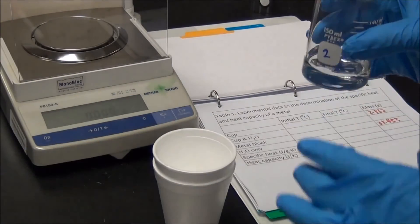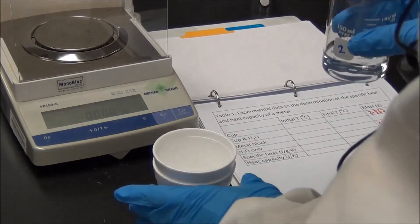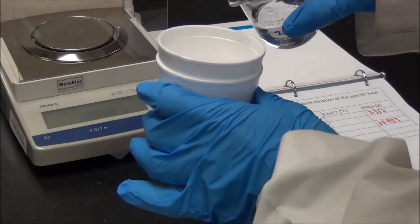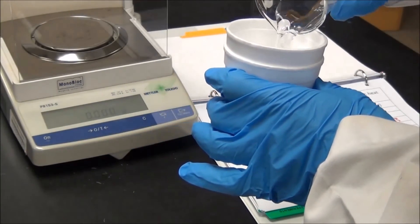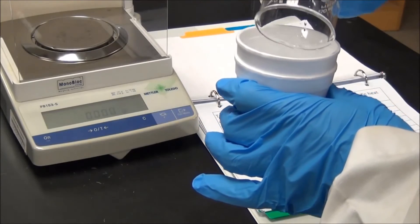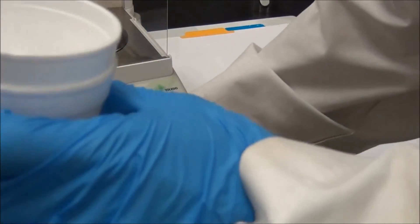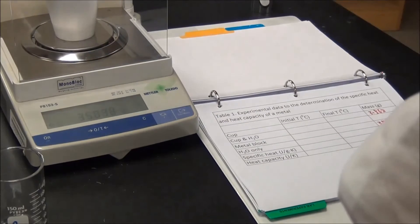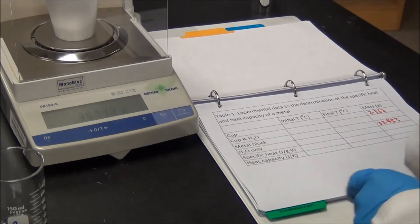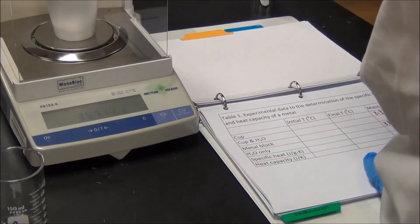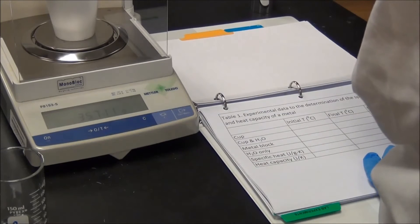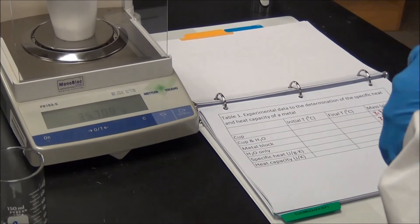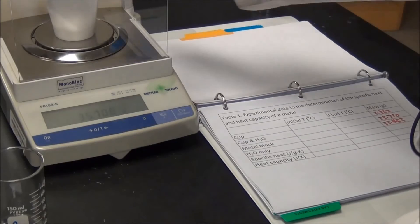But this experiment does require us to know the exact mass of the water. So we put the water into the cup and then take the mass measurement again. The cup plus water is 35.710 grams. And later on, you can calculate the mass of water only.